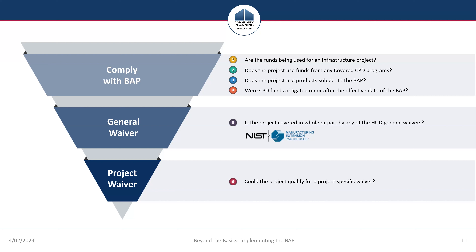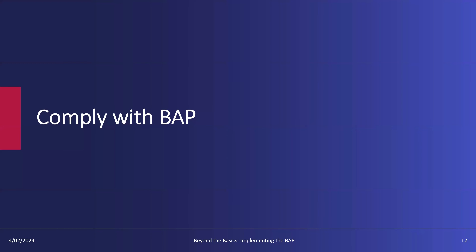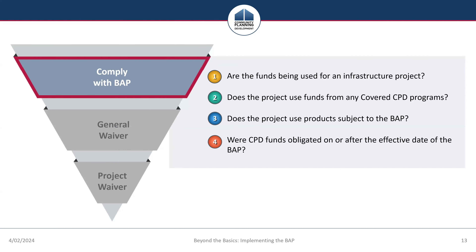Our partners at NIST MEP will also share information about their supplier scouting resources to identify American companies able to produce goods, products, and materials in the United States. To comply with the BAP, you'll need to start by determining whether your project is or is not subject to the BAP. Grantees should consider steps one through four to determine whether the BAP applies to their project: Are the funds being used for an infrastructure project? Does the project use funds from any covered CPD programs? Does the project use products subject to the BAP? And were CPD funds obligated on or after the effective date of the BAP?